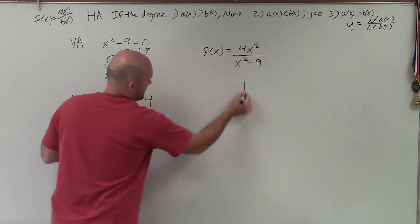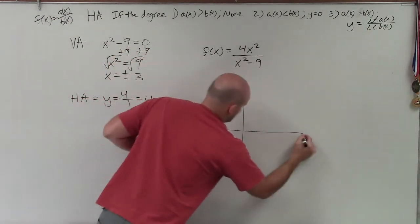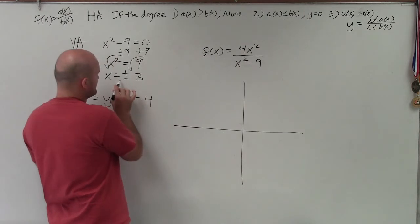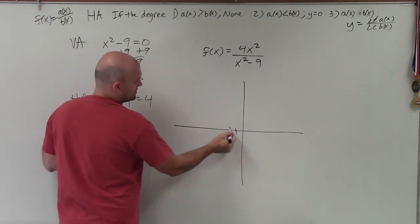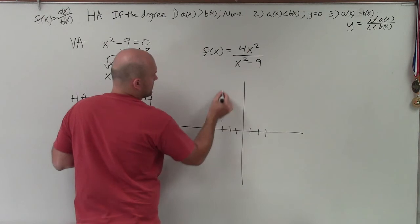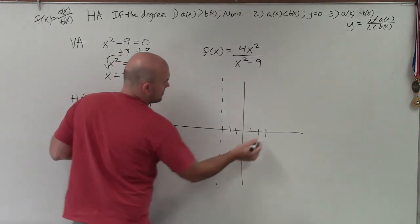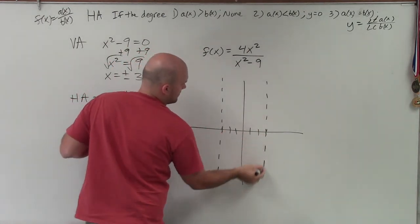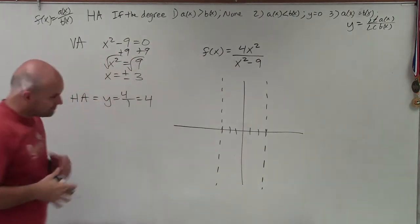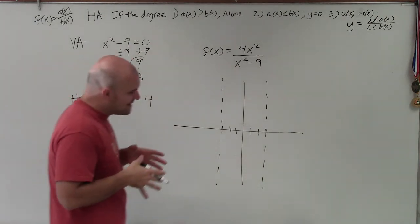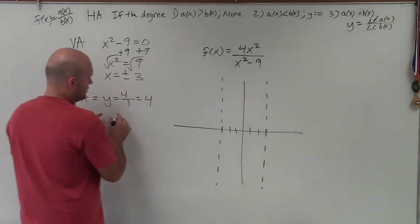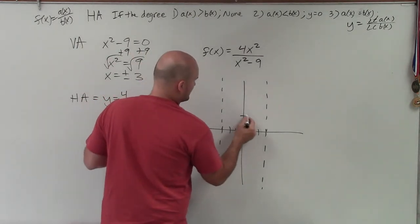So let's go ahead and graph this here. So my vertical asymptotes are at negative 3 and positive 3. So 1, 2, 3. 1, 2, 3. OK. Now, when trying to identify, oh, and that horizontal asymptote is at 4. 1, 2, 3, 4.